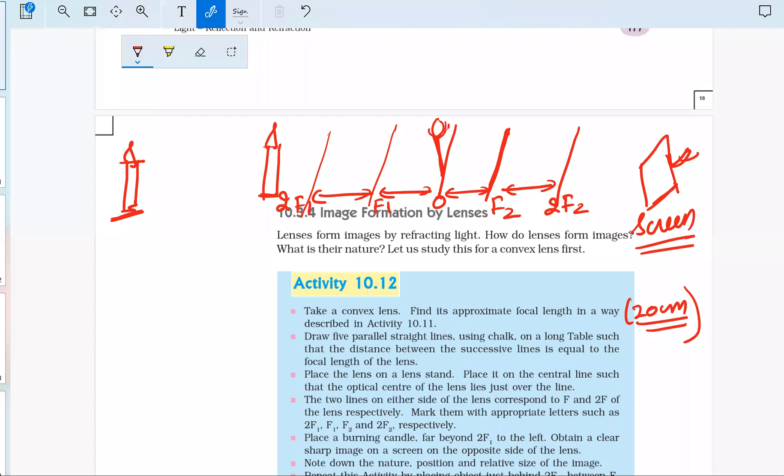When the object is placed at 2F1, at this point, the image will be formed at 2F2. In all these cases, a real and inverted image will be formed. Real image means the image will be obtained on the screen.